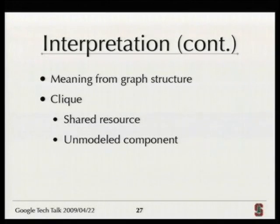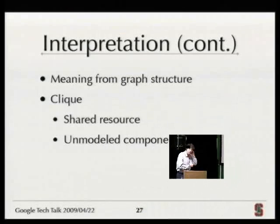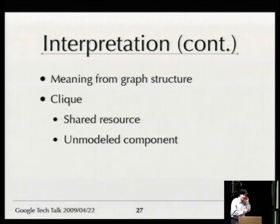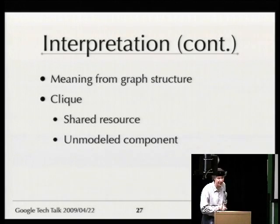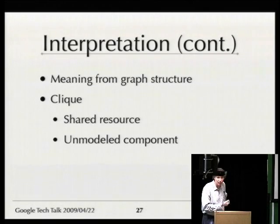The meaning of the graph structure: if you see a clique, that is often an indication of a shared resource. These nodes may not actually have dependencies between each other or talk to each other, but they're all competing for the same resource. When there's a lot of contention, they all influence each other — one getting in stops the others from doing their job. Because it's completely symmetric, the edges will go from every one to every other one. An unmodeled component is another possibility. Cliques are one of the most important patterns to understand.